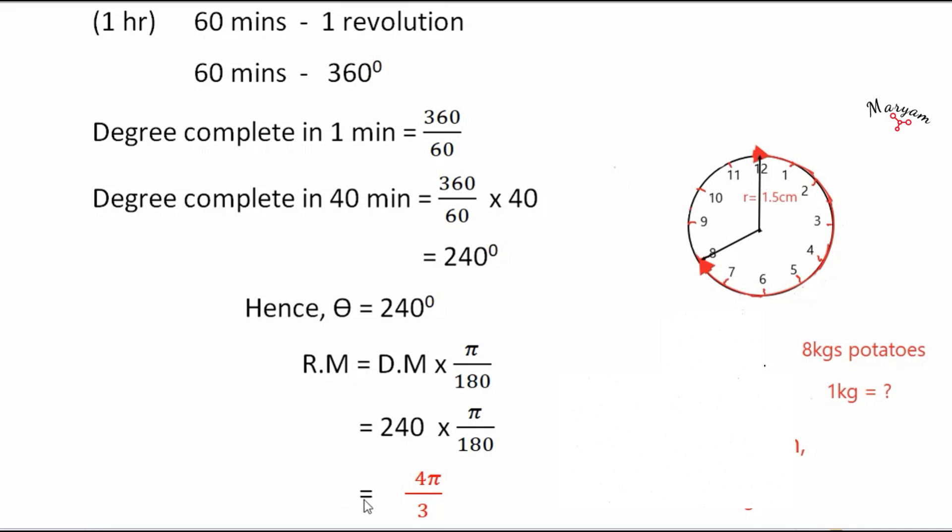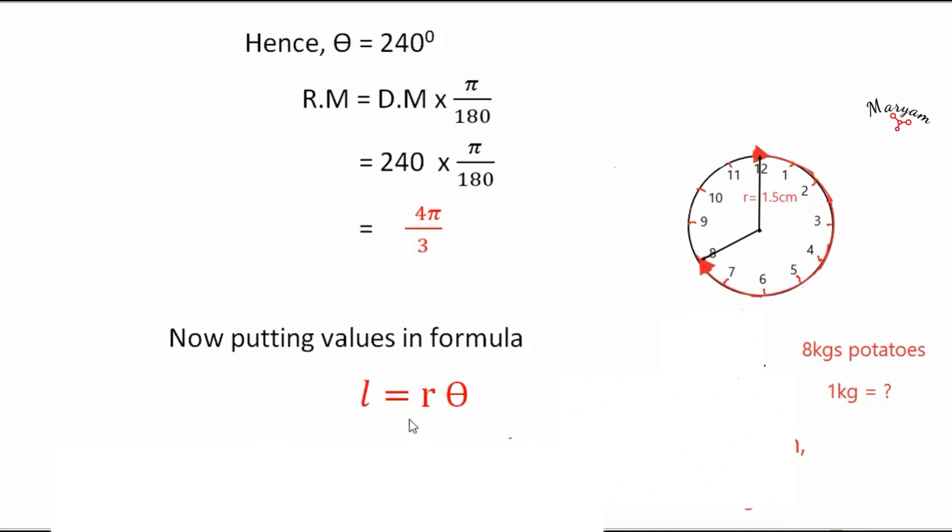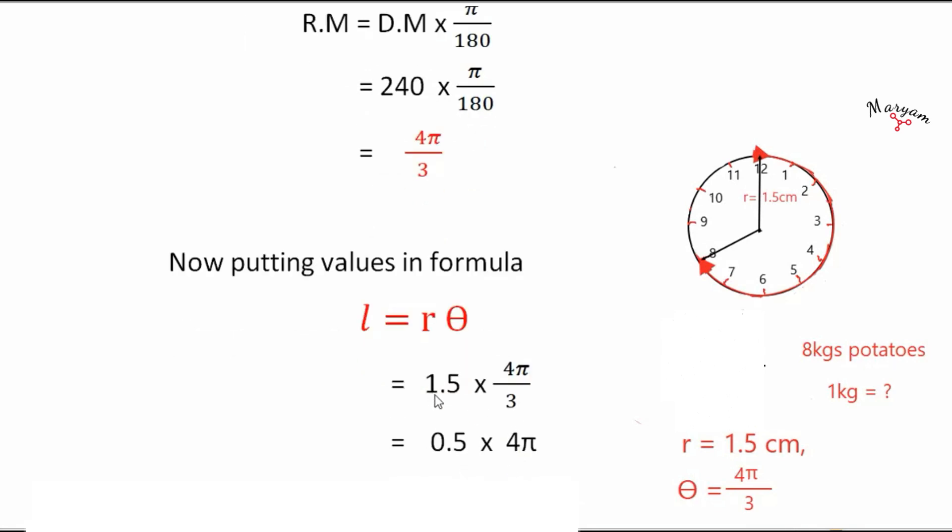Zeros get cancelled, 6 threes are 18, 6 fours are 24, that gives you 4 pi by 3 radians. So the value of theta in radians is 4 pi by 3. Now to use this formula we have both the values of r and theta, that is r is 1.5 centimeter and theta is 4 pi by 3.